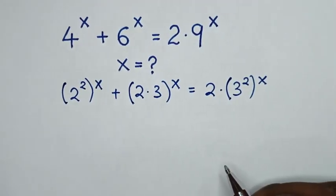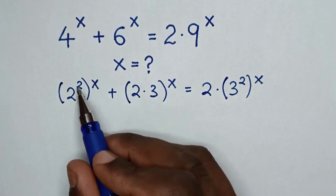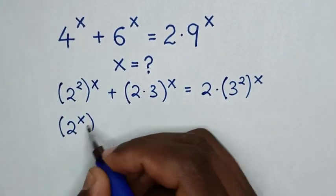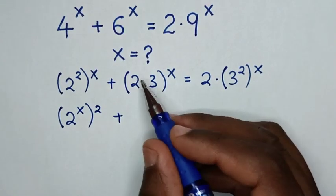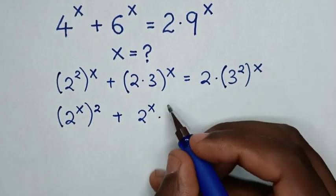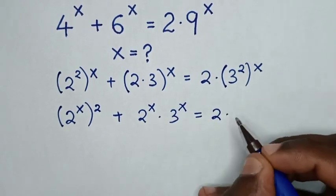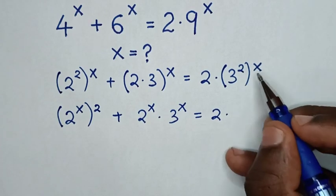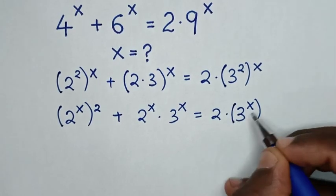In the next step we exchange the powers inside the bracket: x goes inside and 2 goes outside, giving 2 power x, bracket power 2. Then multiplying the power of x inside gives 2 power x times 3 power x, equal to 2 times 3 power x, bracket power 2.